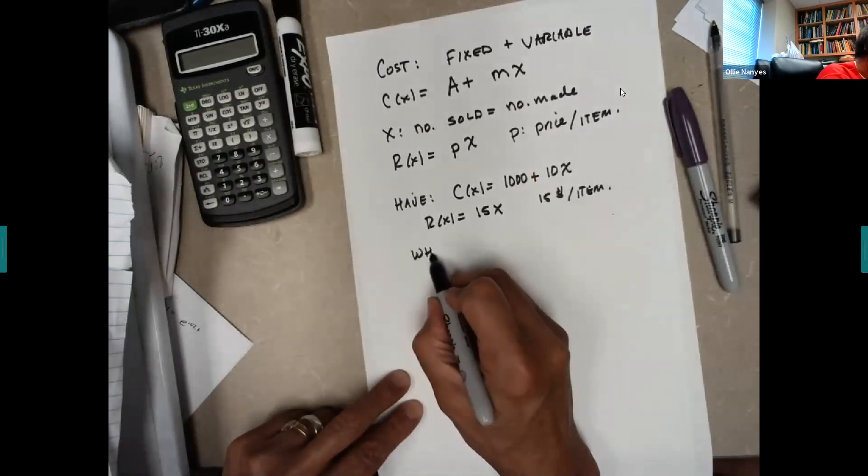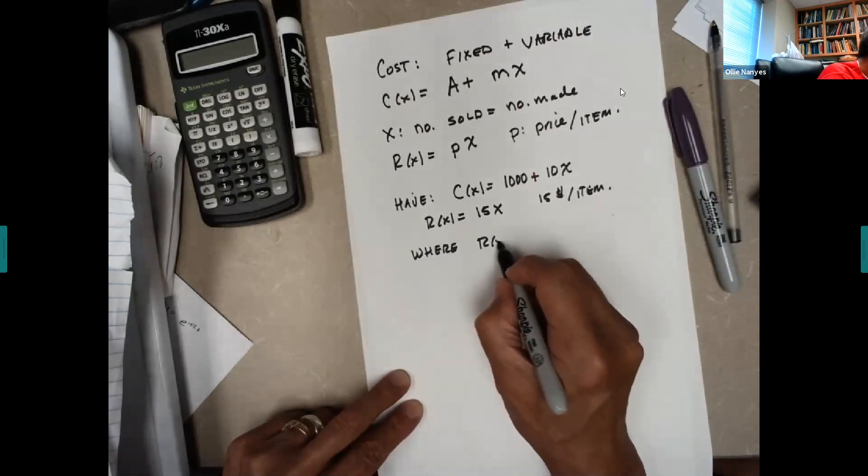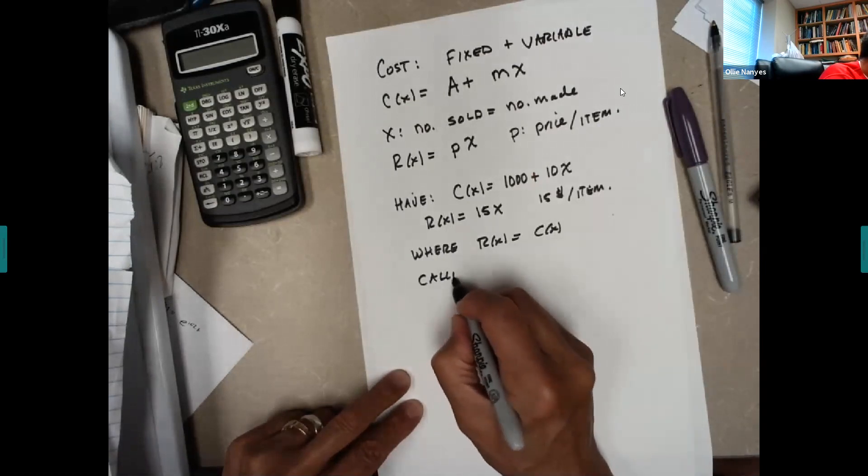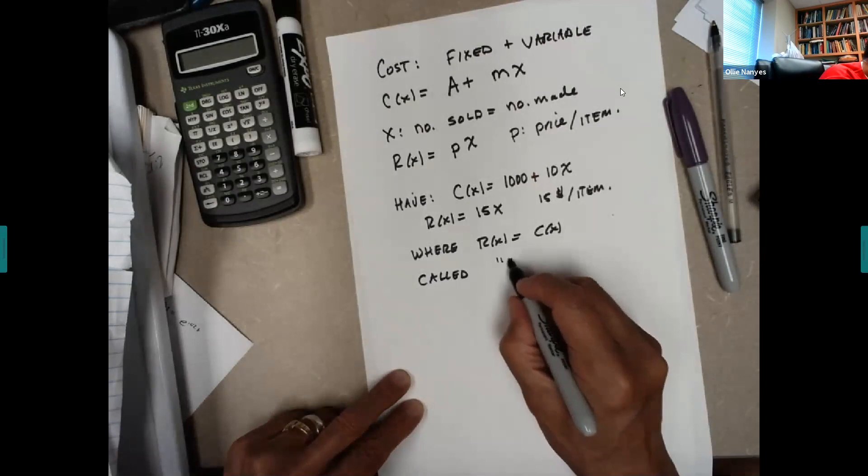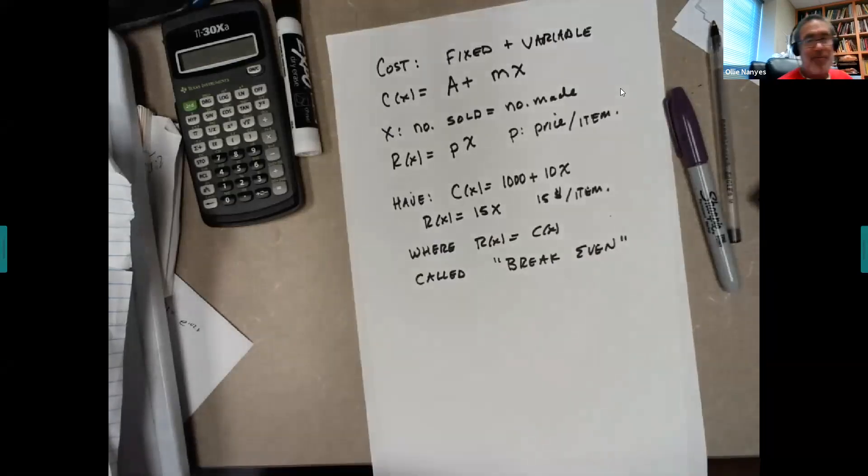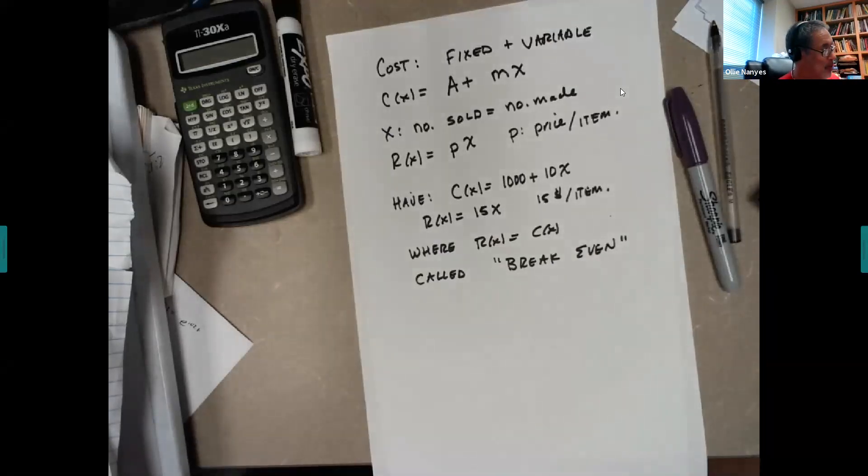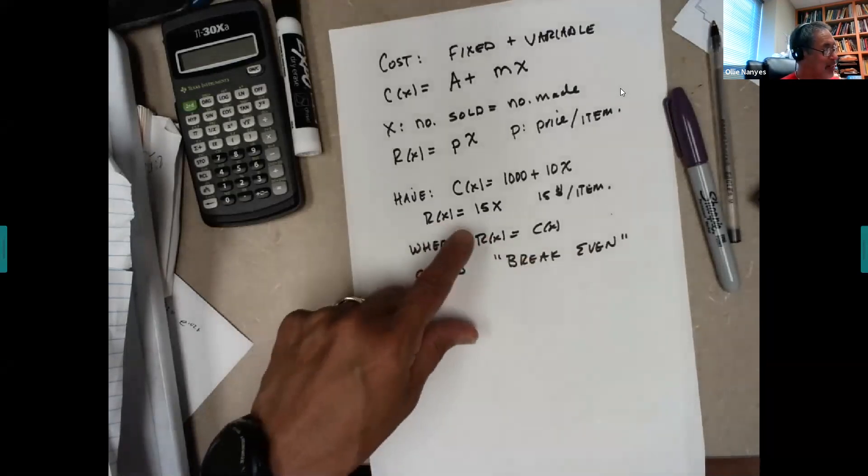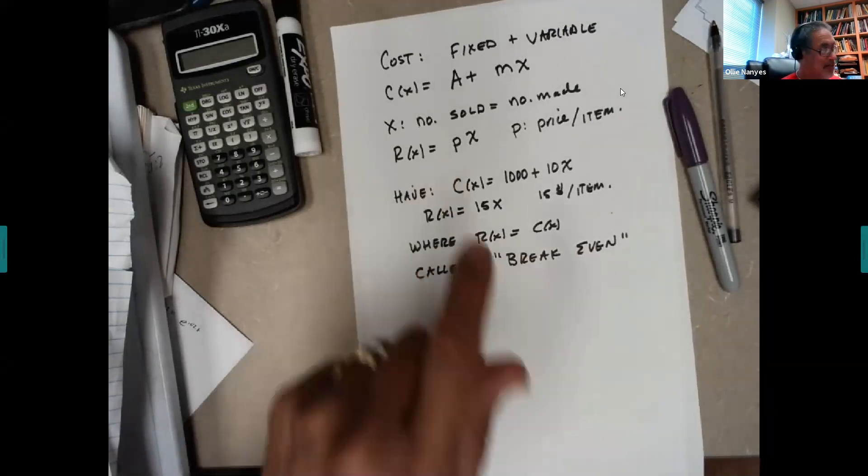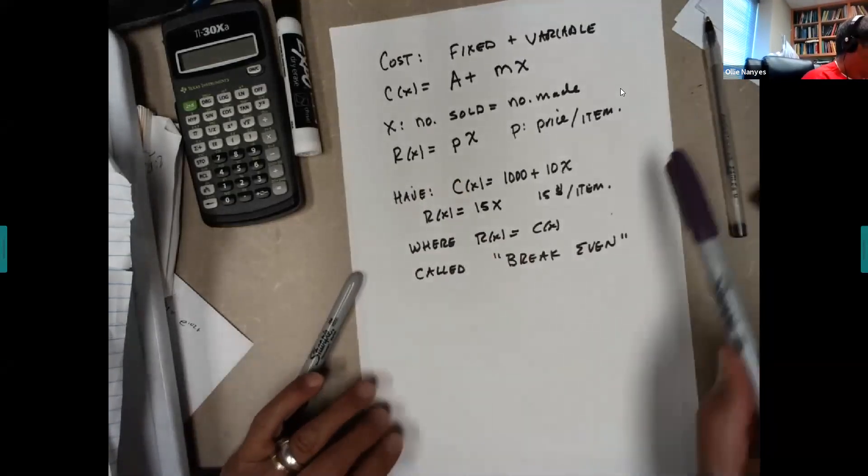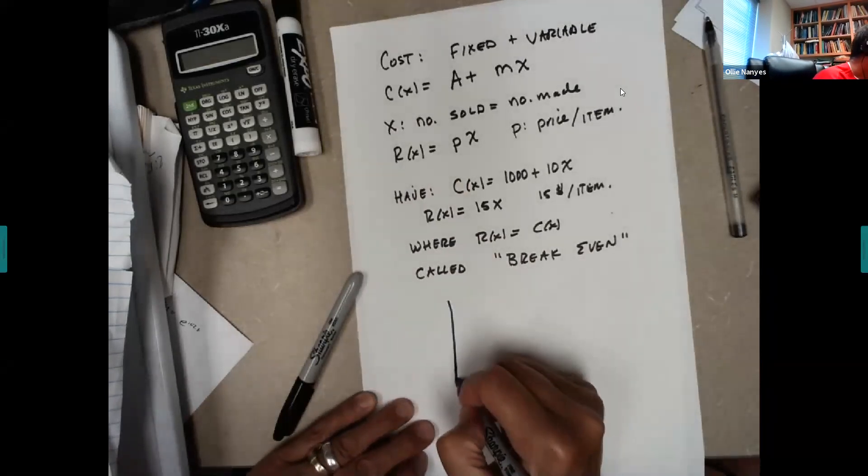Now where R of X is equal to C of X, this is called break even. And you have to get to that number, you have to get to whatever the break even number sold, number made, in order to start having revenues exceed cost. So let's just go ahead and take a very, very quick graph here. This is a very crude sketch.